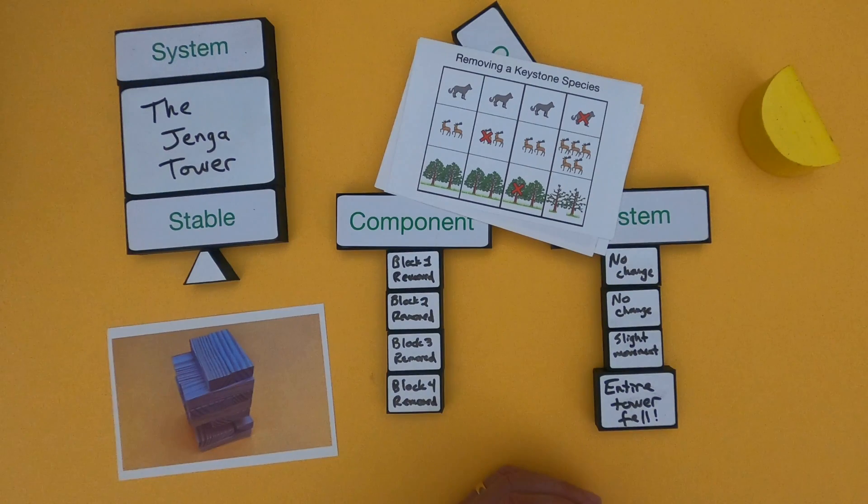So that is level two, thinking in stability and change, change in systems and I hope that was helpful.